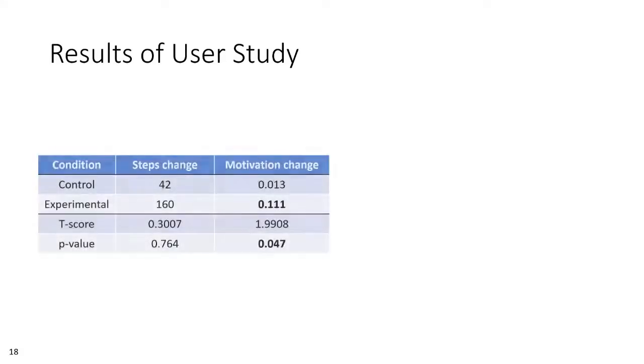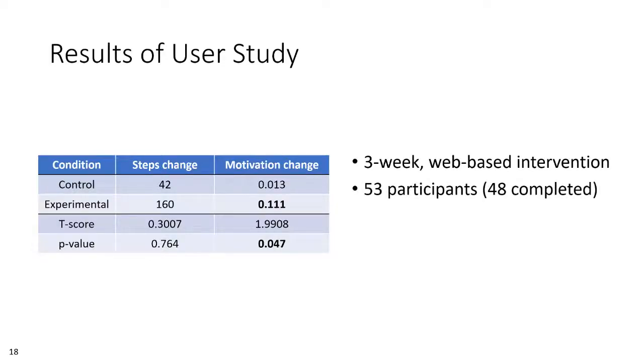We then deployed it in a user study, where participants logged onto a web application each day to view profiles, report their motivation, and so on, as described earlier. 53 participants enrolled, and of the 48 who completed the three-week study, 23 were in the experimental condition where the AI agent chose the profile configuration each day, and 25 were in a control condition where the configuration was selected at random.